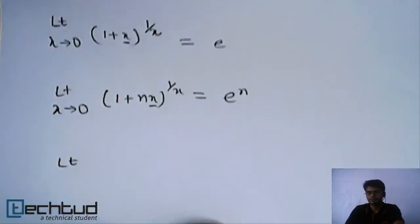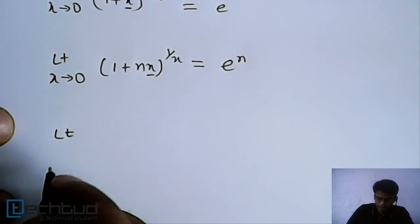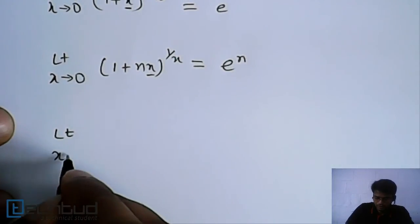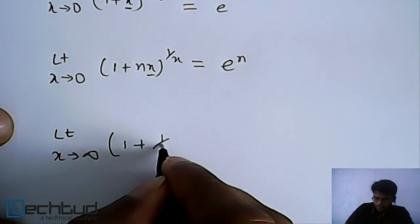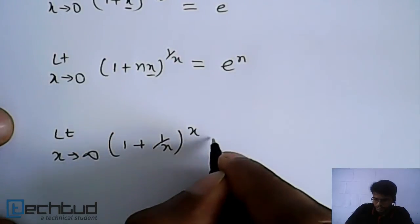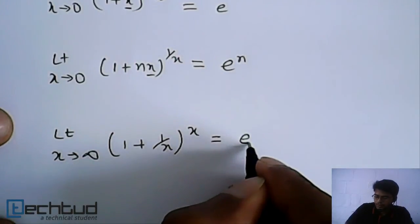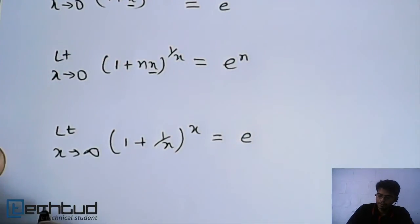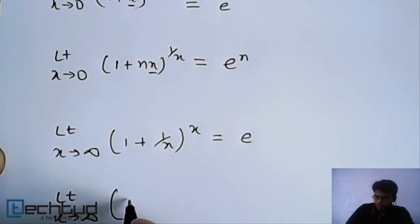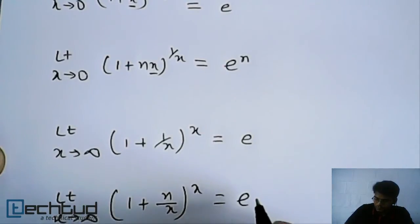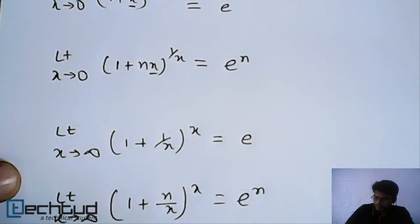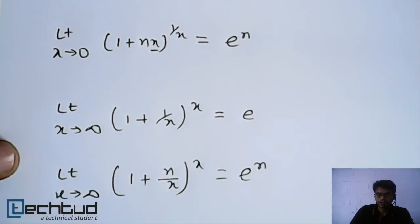The next result is: limit as x tends to infinity of (1 + 1/x)^x, which is again equal to e. And another one is: limit as x tends to infinity of (1 + n/x)^x, which comes out to be e^n — n times in the power.